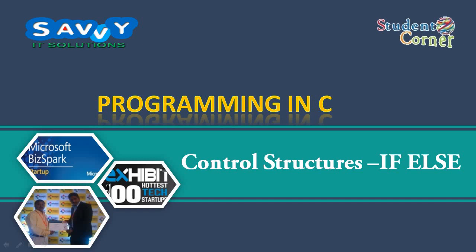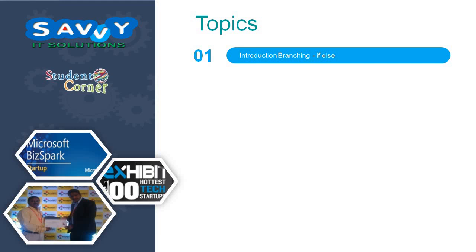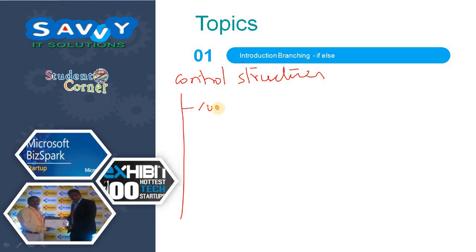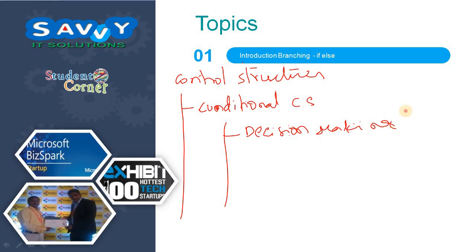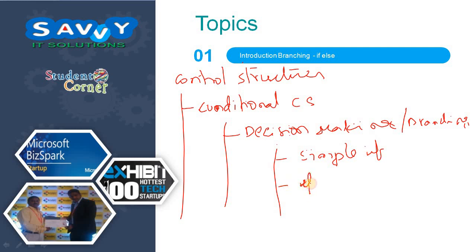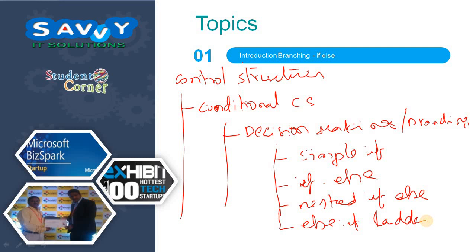Here we are discussing some important parts. Every time we explain that under control structures there are conditional control structures. Under these conditional control structures comes decision making or branching. Under decision making we have: simple if, if-else, nested if-else, and finally the else-if ladder. We have already discussed simple if, and now we are learning the if-else statement.